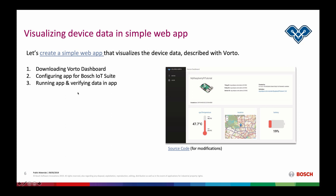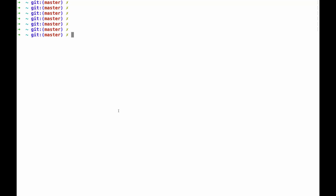In order to now get this dashboard running on our system, we have to do three simple steps. One is downloading the Voto dashboard, which means we will run an NPM command on our terminal in order to install it on our local system. While it is installing, we will go in and do the configuration of the app for the Bosch IoT Suite in a configuration file. The third step will be running the app and verifying the data inside of the app. You can see an example screenshot of it on the right-hand side.